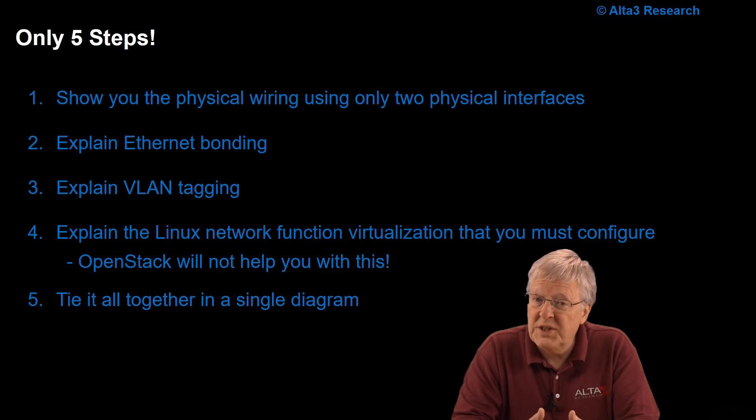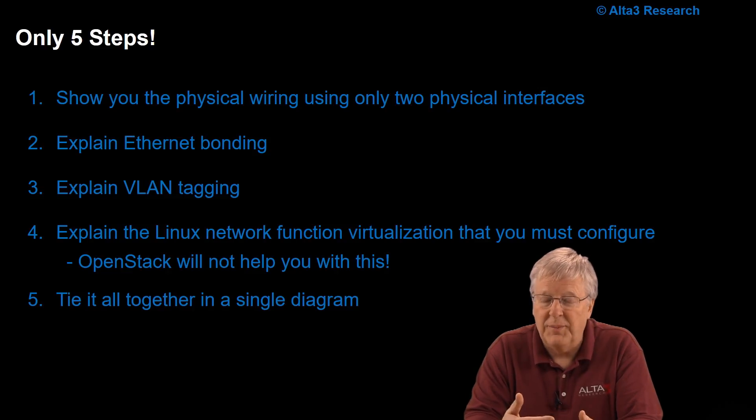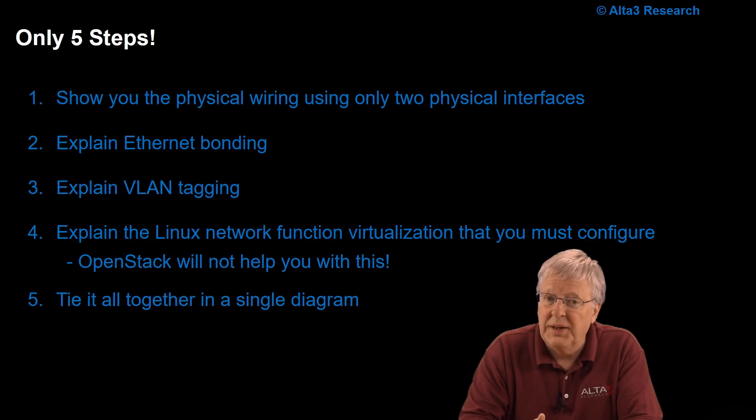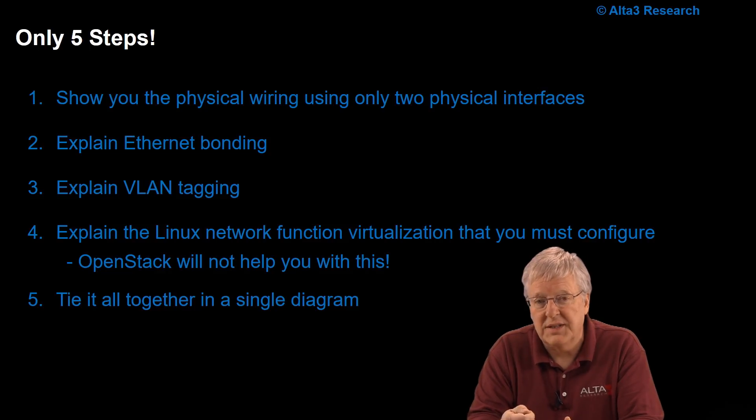First, I'll show you the physical wiring. You only need two physical interfaces. In reality, you only need one, but we're going to use two because we're going to use Ethernet bonding. Ethernet bonding doubles the speed and it gives us reliability in case one of the two cables gets unplugged.